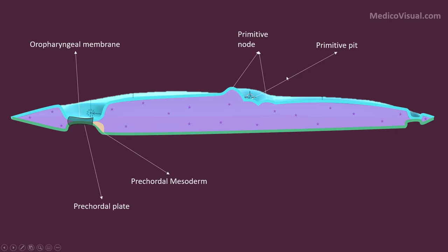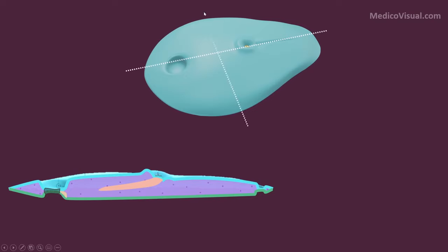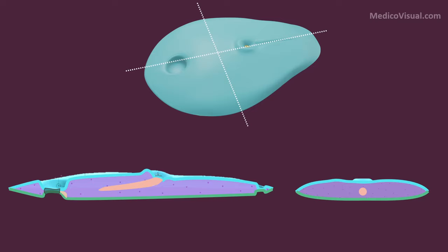What happens is that some cells will ingress and go downward, forming an invagination or process in between the ectoderm and endoderm in the central midline. This process is called the notochordal process. Here is the cut section — we are looking from the side as well as from the front, so two sections are shown. Here is the notochordal process in both views. We have cut it almost from this part and you can see that this is the notochordal process.